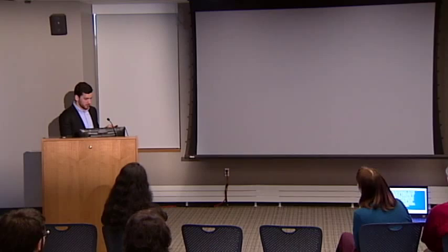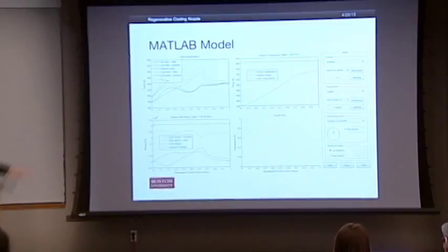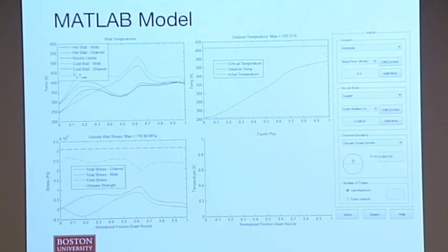So our first result was this MATLAB user-friendly model. On the right side, you can see all the things you can change. You can change the coolant, you can change the material, and what your channel geometry looks like. We also included square channels there that you can't see right now because it's not chosen. But that's a nice little tool that we have. And the idea, like I said before, is that they can punch in a bunch of designs, see which ones work best.